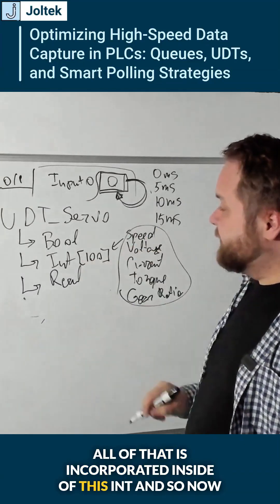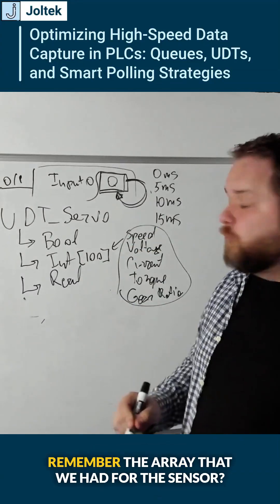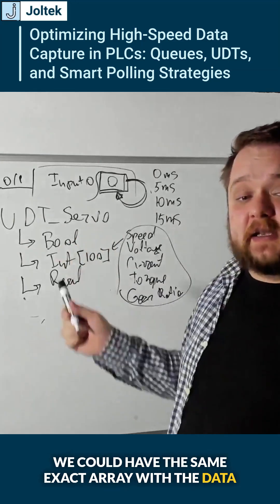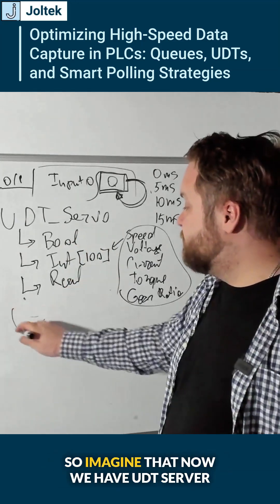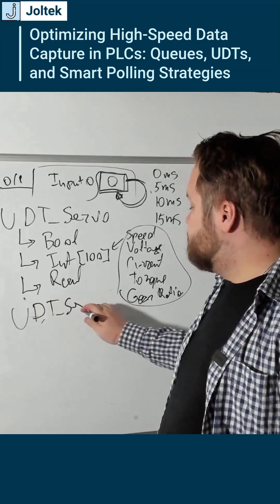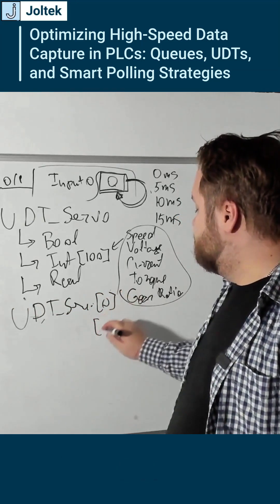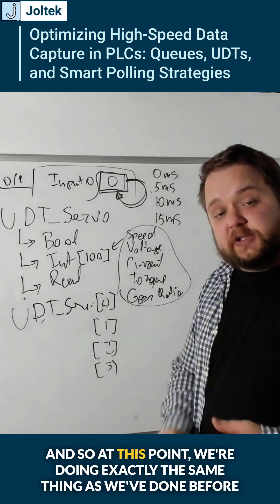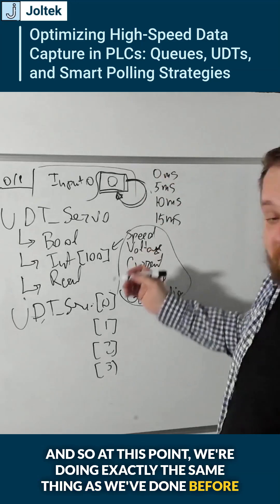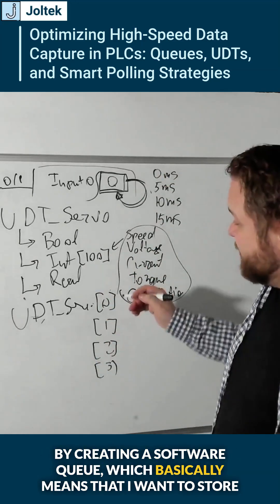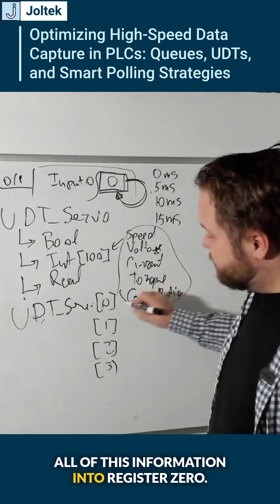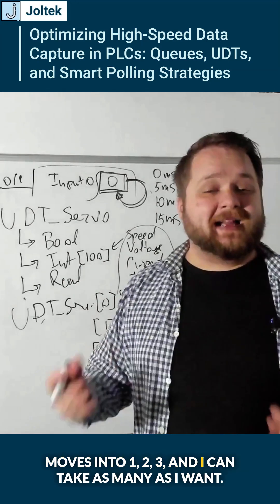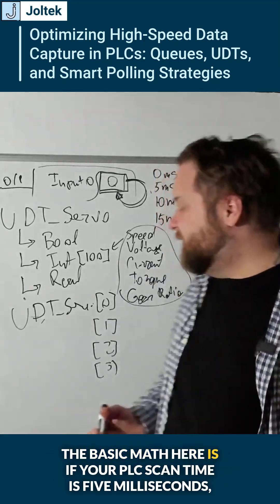All of that is incorporated inside of this UDT, so remember the array that we had for the sensor — we could have the same exact array with the timestamp for the UDT. So imagine that now we have UDT zero, one, two, three, and so on. At this point we're doing exactly the same thing as before by creating a software queue, which basically means that I want to store all of this information into register zero, then as soon as that becomes updated it moves into one, two, three, and I can take as many as I want.